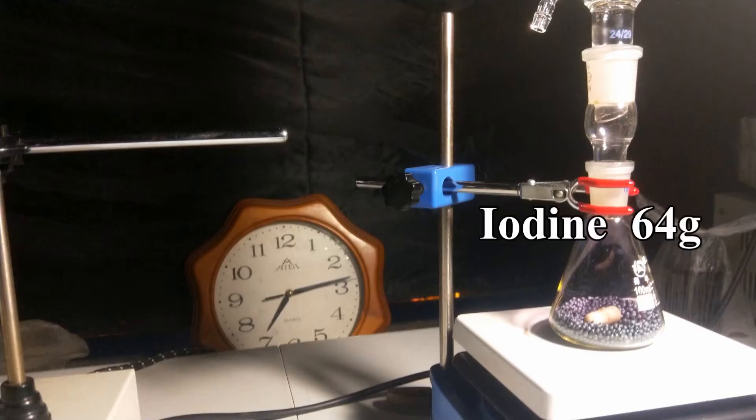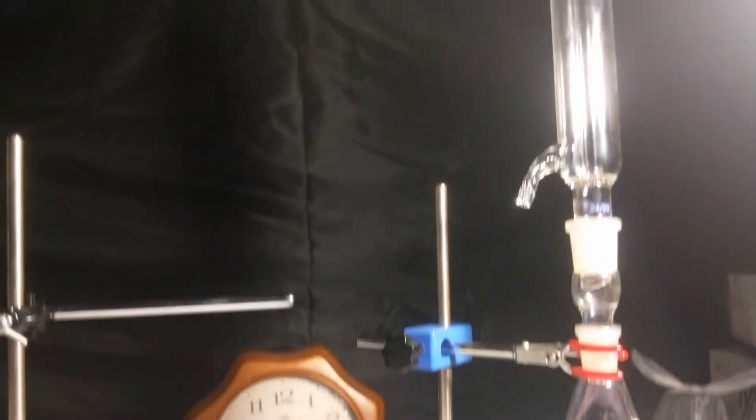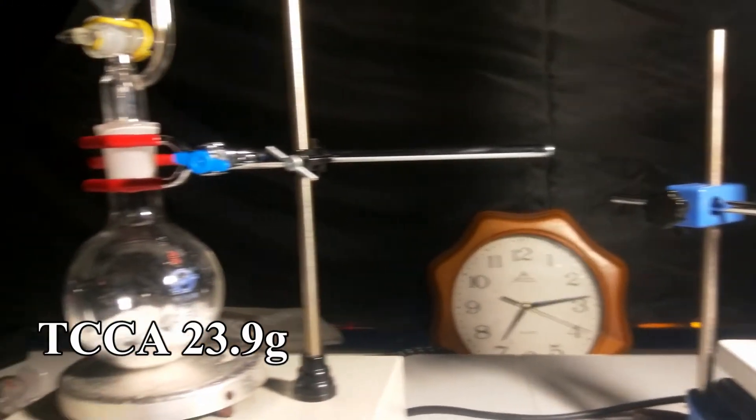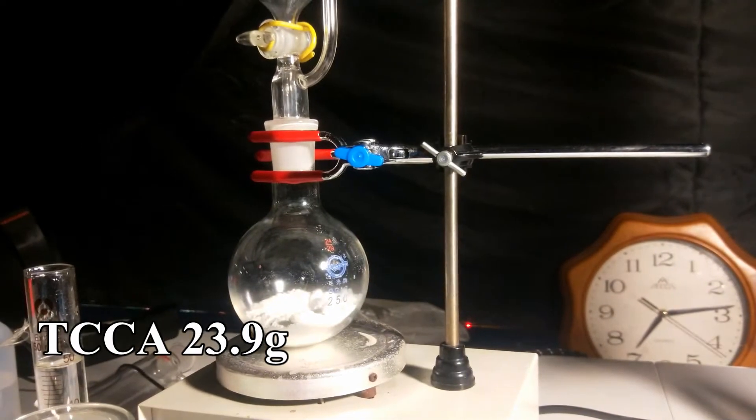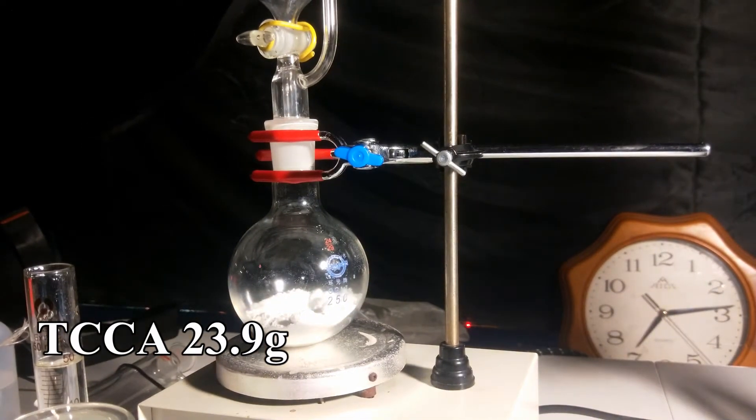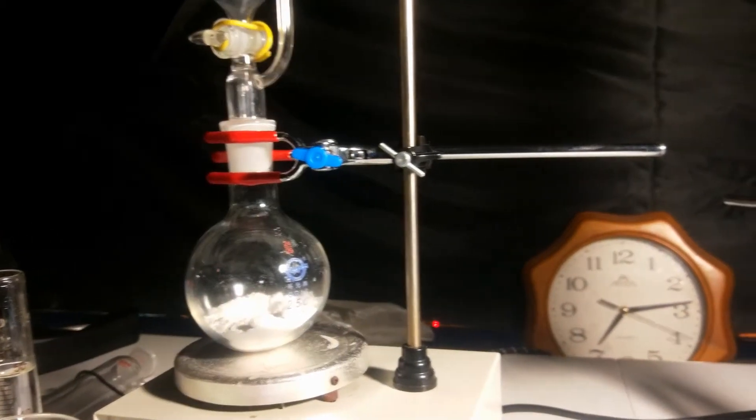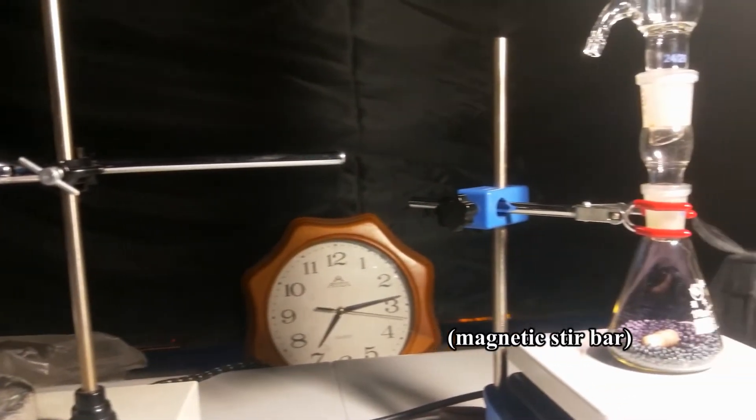64 grams of iodine was placed in a 100 ml conical flask with a condenser placed on the top. 23.9 grams of TCCA was placed in a 250 ml flask as the chlorine generator, connected with a pressure-equalized additional funnel. Both flasks had magnetic stirring.